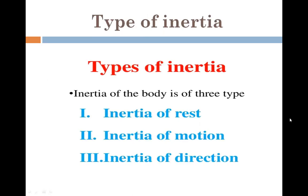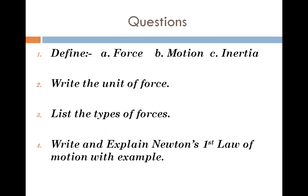What are the types of inertia? We will study them in detail in other lectures, but basically there are three types: inertia of rest, inertia of motion, and inertia of direction. These are the three basic types of inertia, and we will study them in more detail in our next lecture.